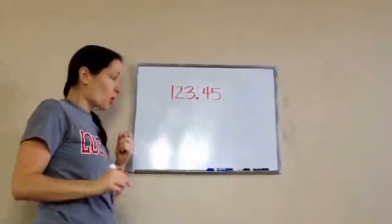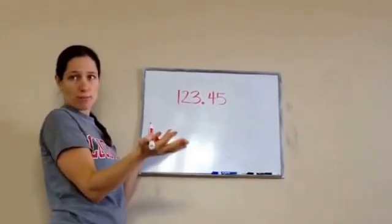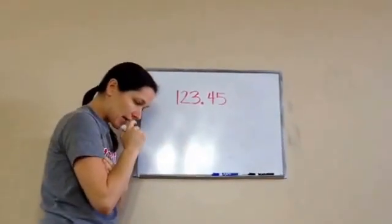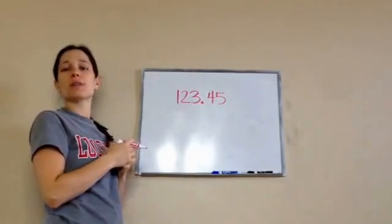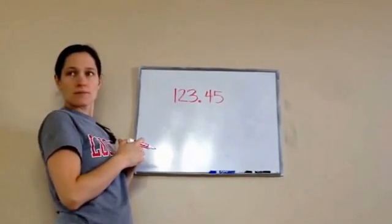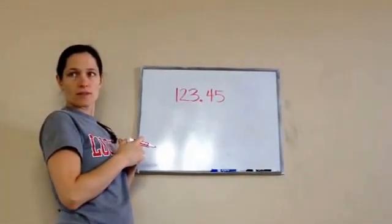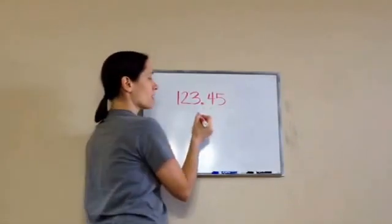Now, they ask this question, which digit, which number, is in the hundredths place? Hundredths is five. Five. Okay. Good.